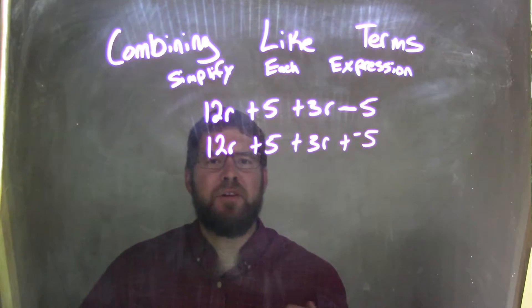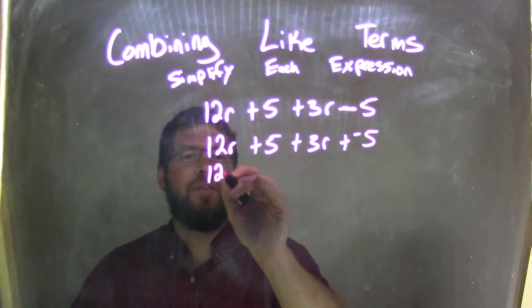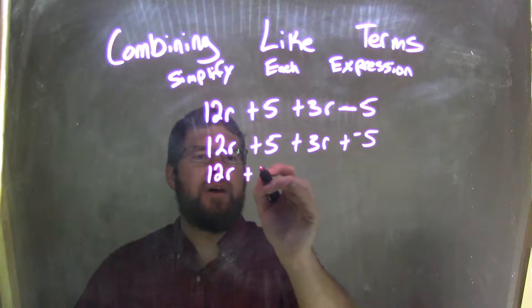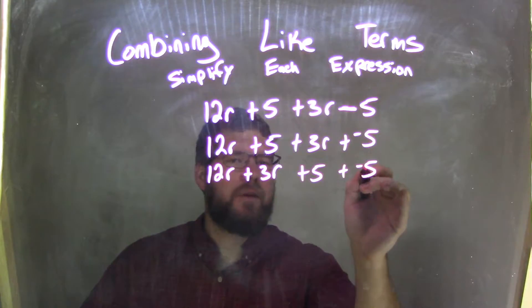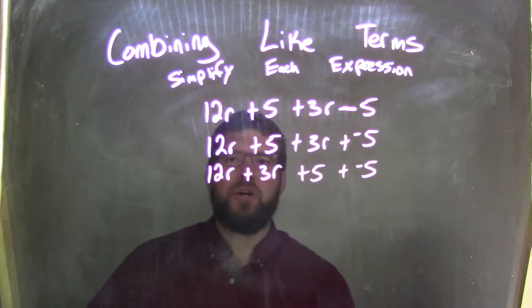So now it's all addition. I can use the commutative property. I'm going to rewrite 12r, put the 3r next to it because they're like terms. This 5 comes out here, and now I have plus negative 5.